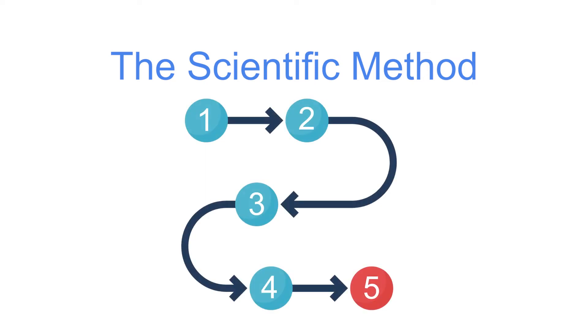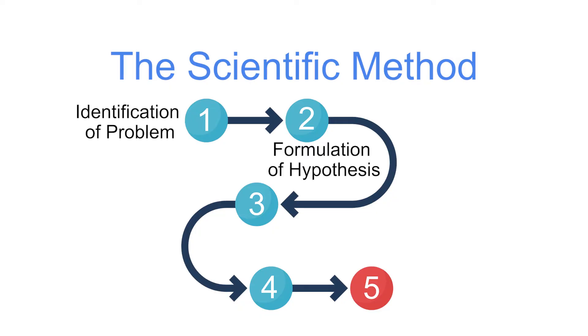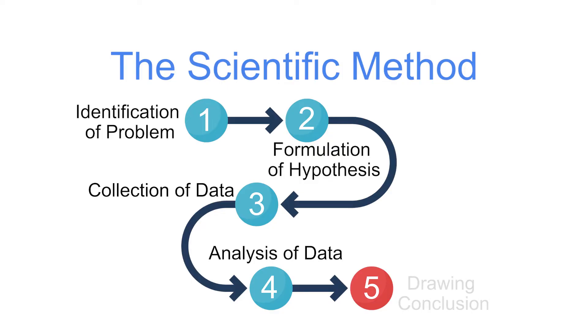To solve problems at hand, scientists use a systematic way called the scientific method. It includes the following steps: identification of the problem based on relevant observations; formulation of an intelligent guess referred to as a hypothesis; collection of data through experimentation; and analysis of data and drawing conclusions. This scientific method can also be applied in daily lives.